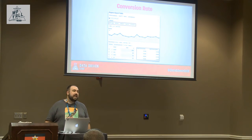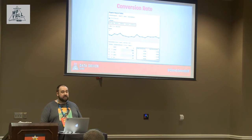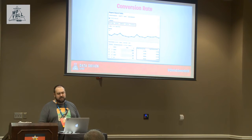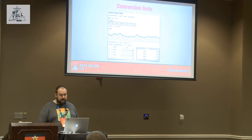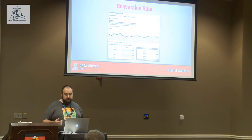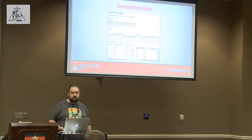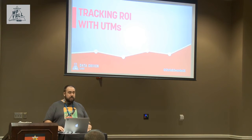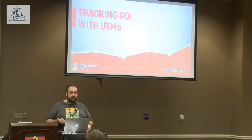With goals, you can actually see conversion rates broken down by traffic source. For example, you can see that Google traffic converts at 33%, Yahoo at 35%, and AOL at 28% for a specific goal. Each goal gets its own conversion rate, which is really cool and helps you evaluate which channels are most effective.